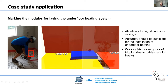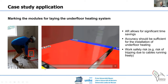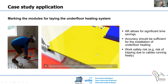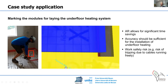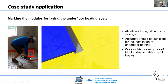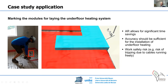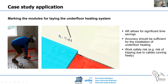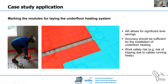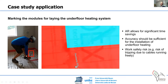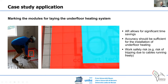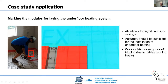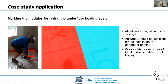Here we see marking the modules for laying the underfloor heating system. In the video, you see what the foreman sees — here are different underfloor heating modules. One potential risk that we investigated is tripping: you see this cable that appears. If the foreman or user focuses too much on the augmented reality hologram, this could create work safety risks. Here we see the foreman marking where the floor heating system should be placed in a kitchen.